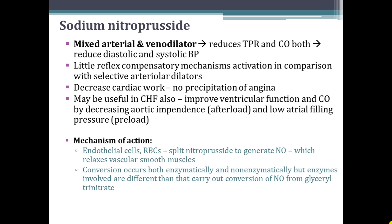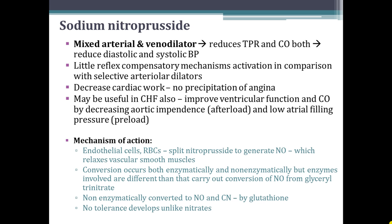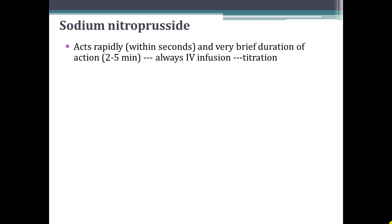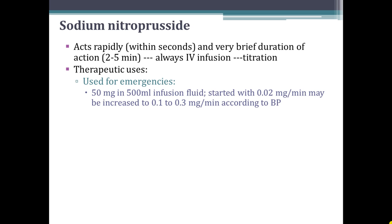Conversion occurs both enzymatically and non-enzymatically, but the enzymes involved are different from those that carry out conversion of nitric oxide from glyceryl trinitrate. Non-enzymatically it is converted to nitric oxide and cyanide by glutathione, and no tolerance develops with sodium nitroprusside unlike with nitrates. Nitroprusside acts rapidly within seconds and has a very brief duration of action of 2 to 5 minutes, so it is always given by IV infusion with dose titration. For therapeutic use, 50 mg of sodium nitroprusside is diluted in 500 ml of infusion fluid, started at 0.02 mg per minute and may be increased to 0.1 to 0.3 mg per minute according to blood pressure response.